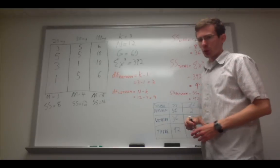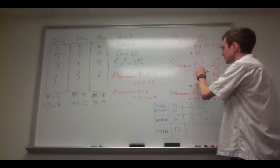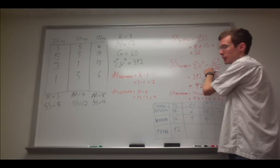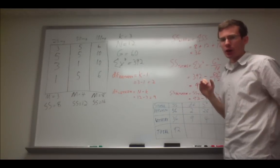Next, I calculate SS total. I'll show you why in a second. That, symbolically, is the sum of x-squared minus G-squared over N. We have all those values. Simply plug those in here, and you get a value of 92.